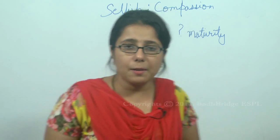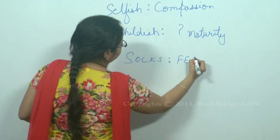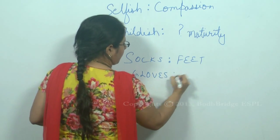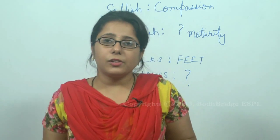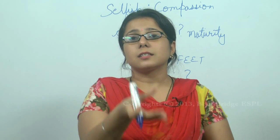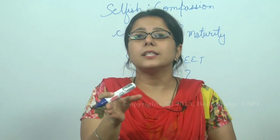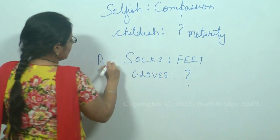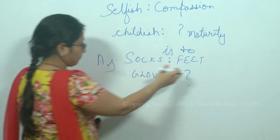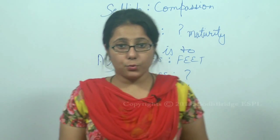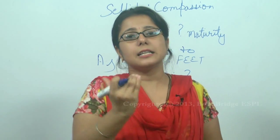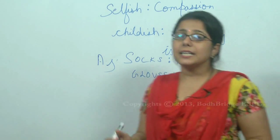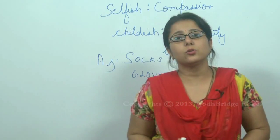Let's do another example: socks and feet. This is the question pair. Now you have gloves and a question mark is given. To fill the question mark, try to build a bridge between the words by making sentences with the pairs. You can say 'socks is to feet, similarly gloves is to hands.' So the question mark will be replaced by hands. You can relate analogy pairs using sentences, making it easy to answer the questions.